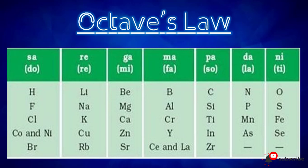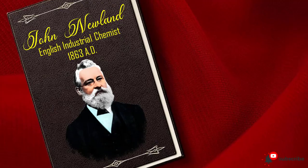On the basis of this law of octave, Newland arranged the elements known to him in the form of a table which shows similarity in properties of elements. For example, sodium is the eighth element from lithium and has similar properties. Likewise, magnesium is the eighth element from beryllium and has similar properties.